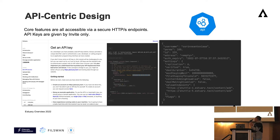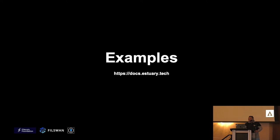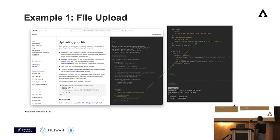Estuary was built with an API-centric design mindset, meaning all features and functions are accessible via HTTPS endpoints. Uploading a file, listing all files, creating collections, and even uploading CAR files are all accessible via HTTPS endpoints. Here's an example of how to upload a file: you only need to call the endpoint slash content slash add, pass the authorization bearer token, and you're good to go. Estuary will take care of all the replications and aggregations of your CIDs.